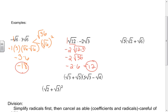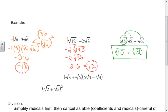This next example is a distributive property example. Radical 5 times radical 2 is radical 10, and radical 5 times radical 6 is radical 30. I can't simplify the square root of 10 or the square root of 30, and I can't combine them because they're not the same. So that is my answer.